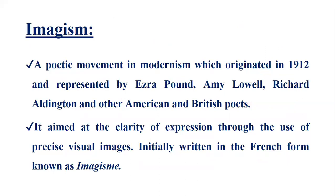The next characteristic is mainly poetic, but we are going to relate it to prose as well. It is a poetic movement in modernism which originated in 1912 and was represented by Ezra Pound, Amy Lowell, Richard Aldington, and other American and British poets. This was mainly a poetic character trait, yet we are going to analyze it in prose as well. It aimed at clarity of expression through the use of precise visual images, initially written in a form known as imagism.